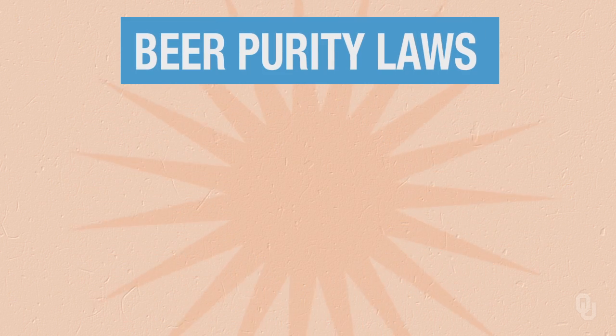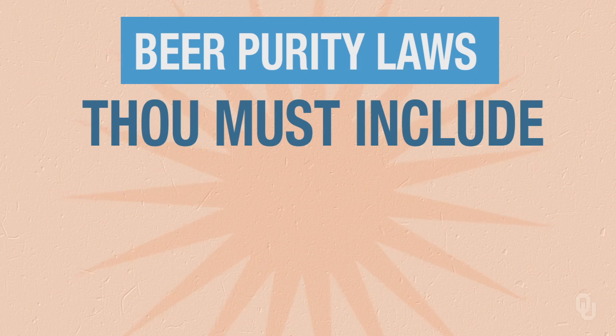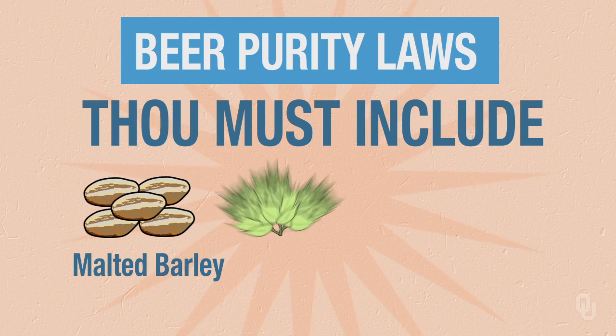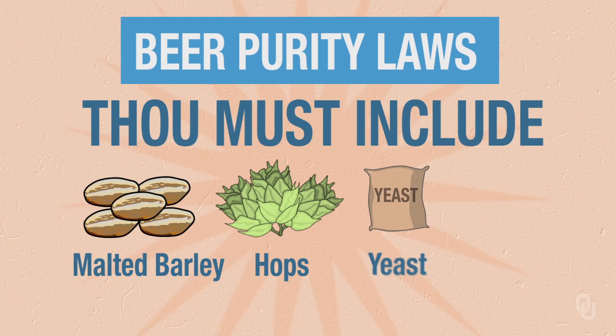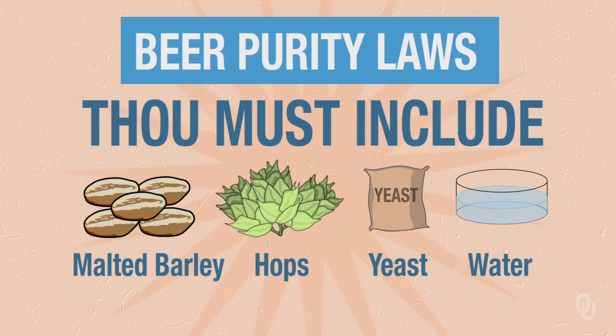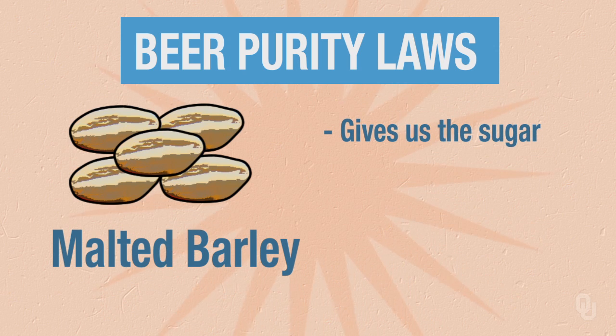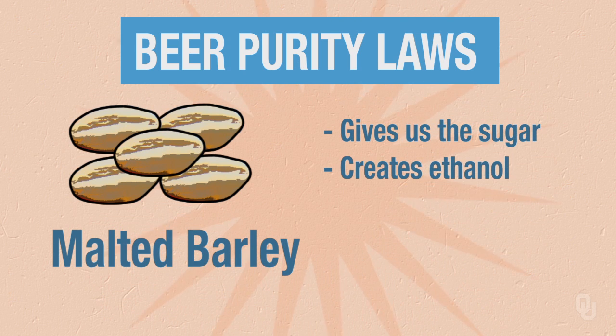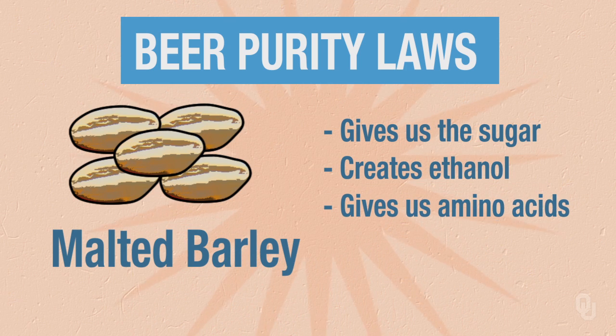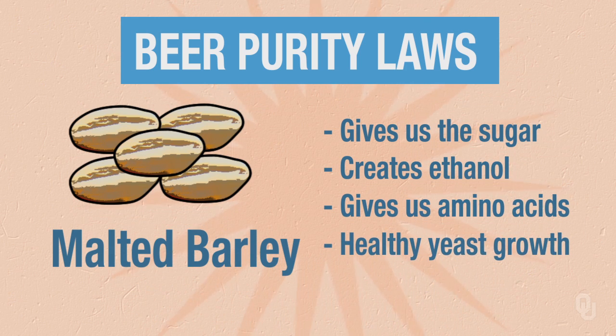It wasn't until around 700 AD that we got into using hops in beer. This became the main definition of beer in 1516 with beer purity laws, which stated that beer should consist of malted barley, hops, yeast, and water. The malted barley gives us the sugar required to create ethanol, plus it gives us the amino acids and lipids necessary for healthy yeast growth.